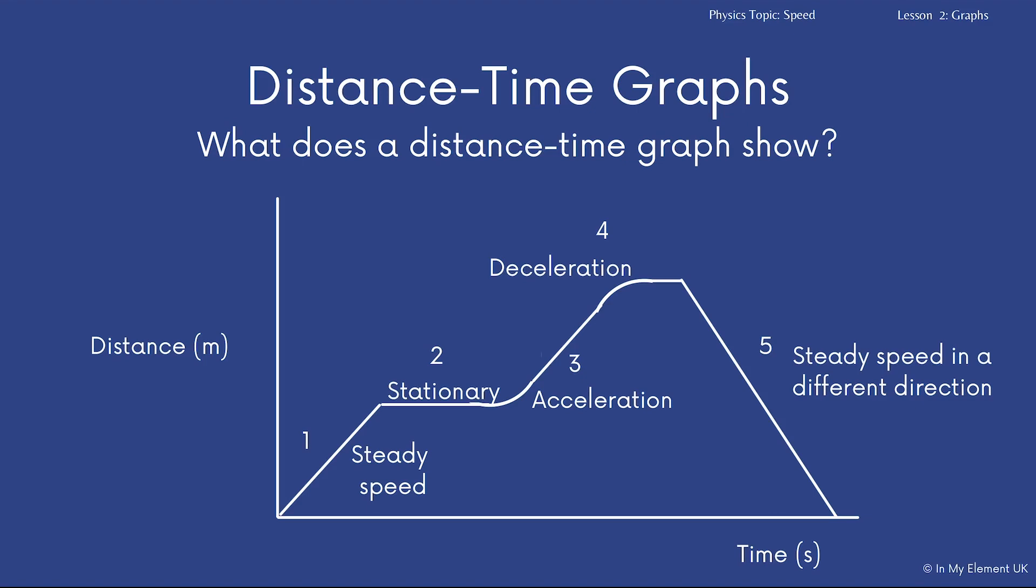Okay, and this can be for a person running or it could be for someone driving a car or riding a bike. Point four, we're showing a deceleration, the curve is tailing off.